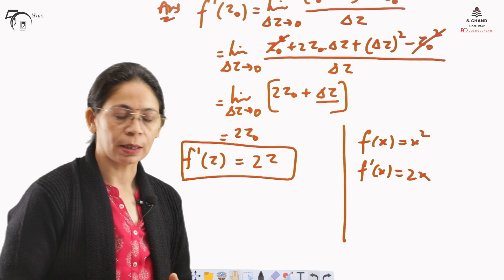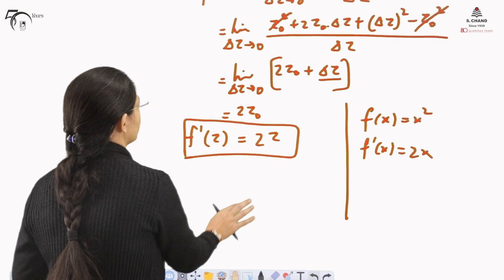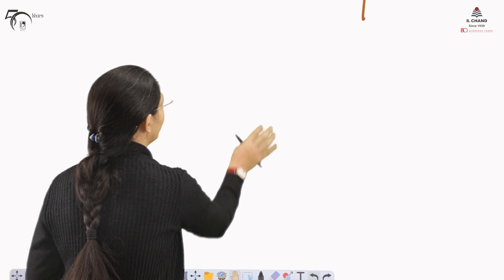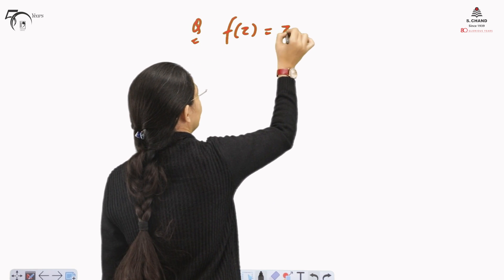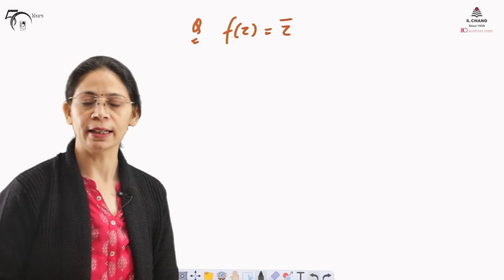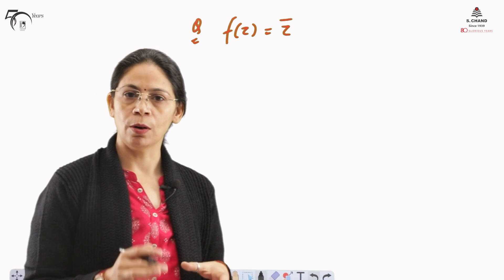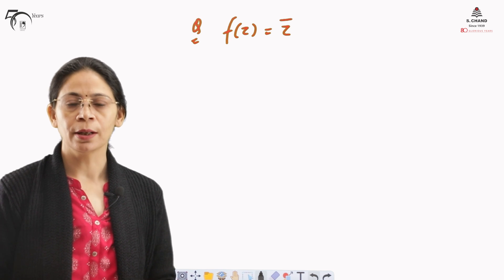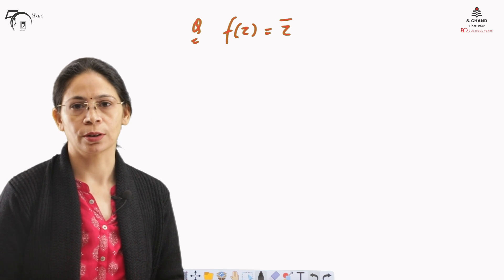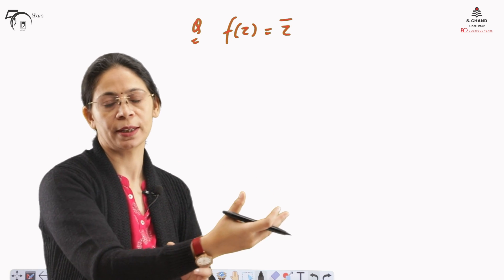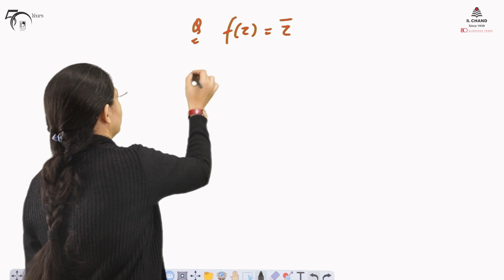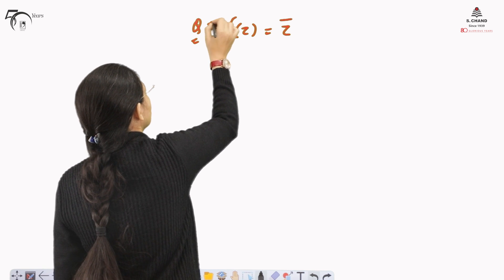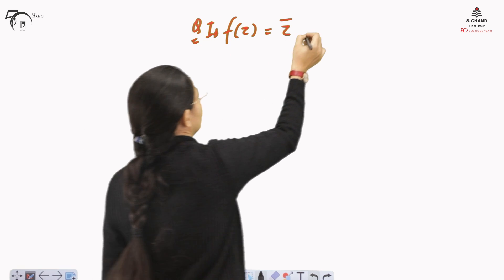The difference is that the derivative does not exist always. Let us take the function f(z) = z̄ (z-bar, the complex conjugate), and determine whether the limit — and hence the derivative — exists for this function.